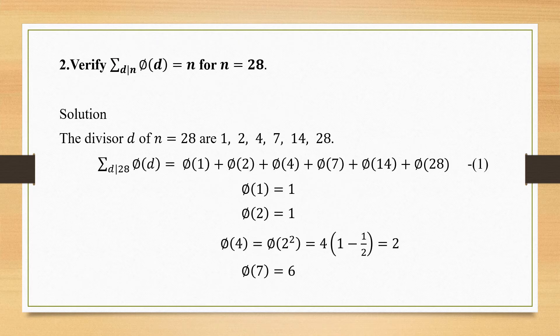Now let us move on to the second problem: verify that Σ_{d|n} φ(d) = N, for N = 28. The divisors D of N = 28 are: 1, 2, 4, 7, 14, and 28 — a total of 6 divisors. So Σ_{d|28} φ(d) = φ(1) + φ(2) + φ(4) + φ(7) + φ(14) + φ(28). Name it as equation 1.